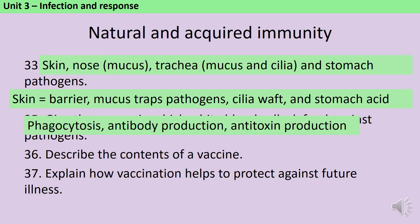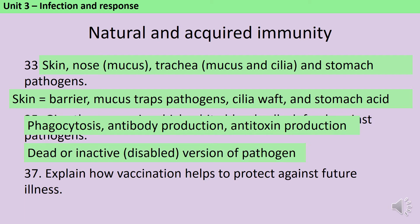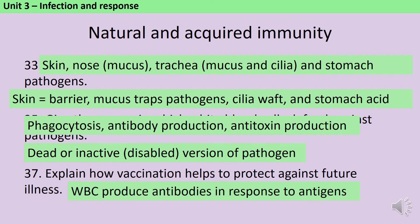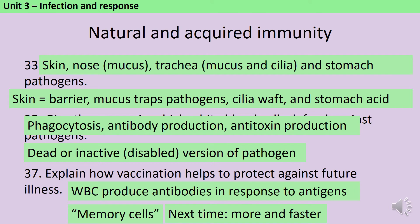A vaccine contains either a dead version of a pathogen or a disabled, immobile version of a pathogen. Vaccination introduces your immune system to the pathogen without you actually being exposed to the disease. Your white blood cells produce antibodies in response to that pathogen, and then special cells called memory cells remember which antigens they've met in the past. So the next time they meet those antigens, they're able to produce those antibodies far more quickly and in far greater quantities than on initial exposure.